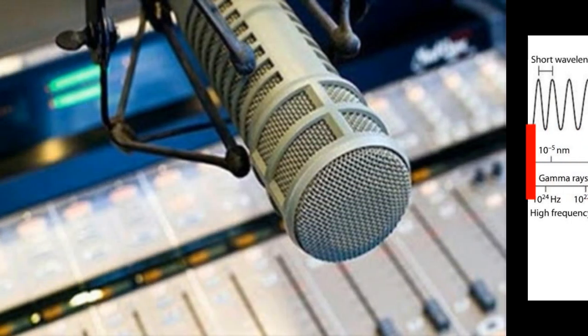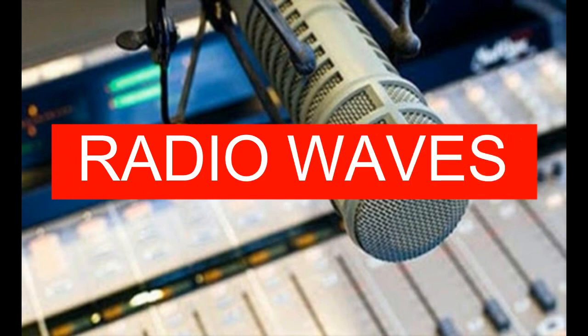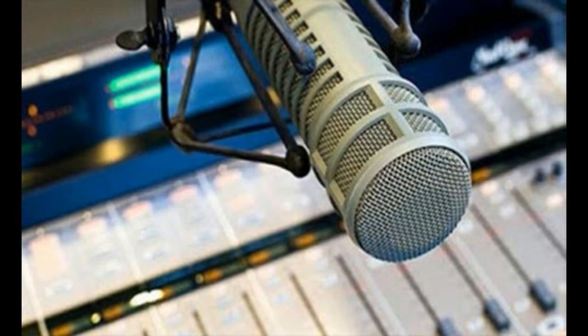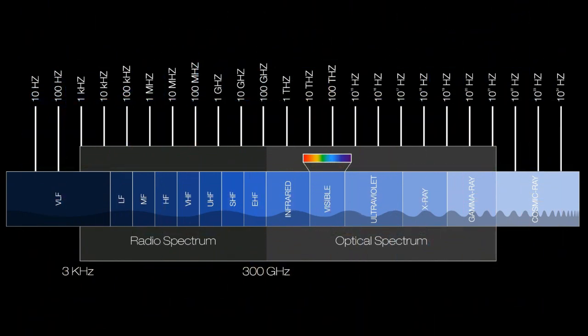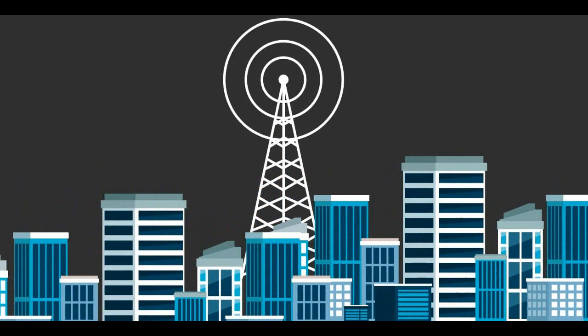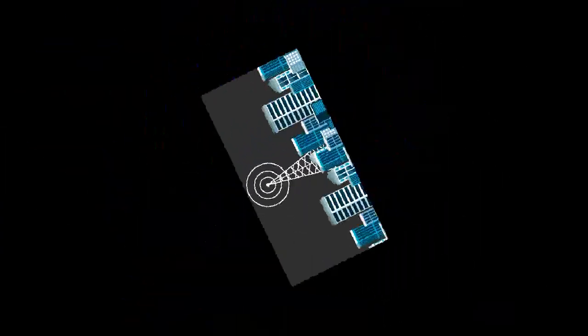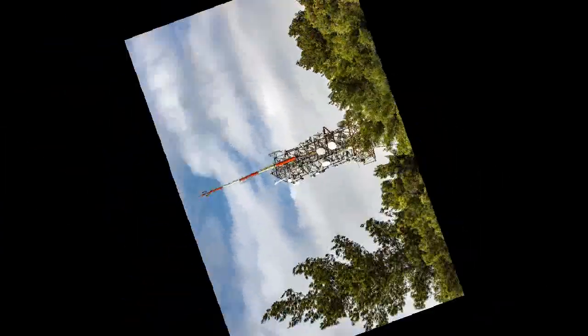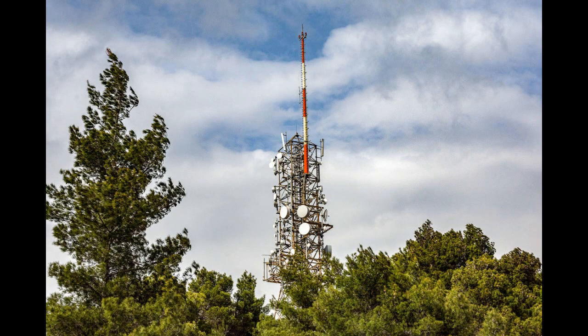Radio waves are the lowest frequency waves in the EM spectrum. Radio waves can be used to carry other signals to receivers that subsequently translate these signals into usable information. Many objects, both natural and man-made, emit radio waves.